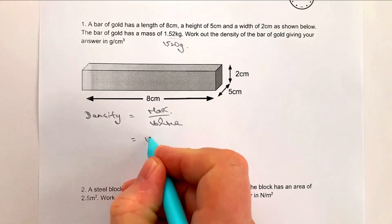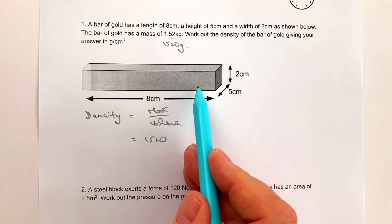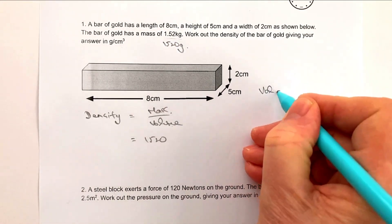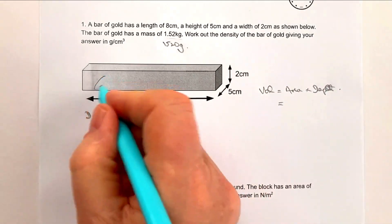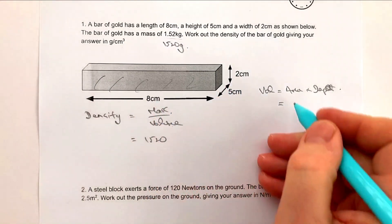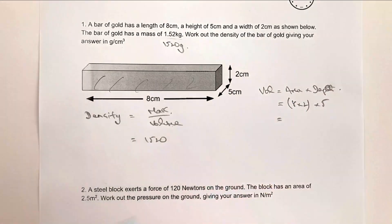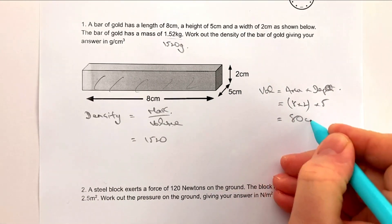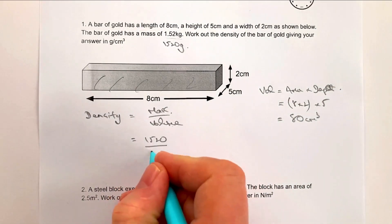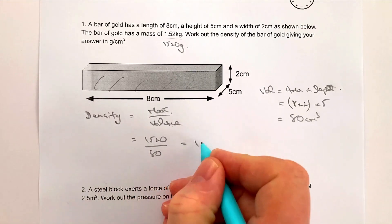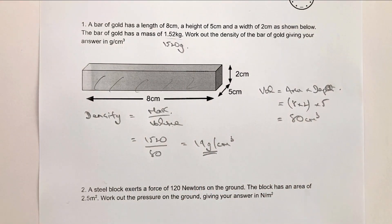The mass we know is 1,520 grams. For the volume of the gold bar, volume equals area times depth. The area is 8 times 2, and the depth is 5, giving a volume of 80 centimeters cubed. So density equals 1,520 divided by 80, which gives a density of 19 grams per centimeter cubed — that's the answer to question one.